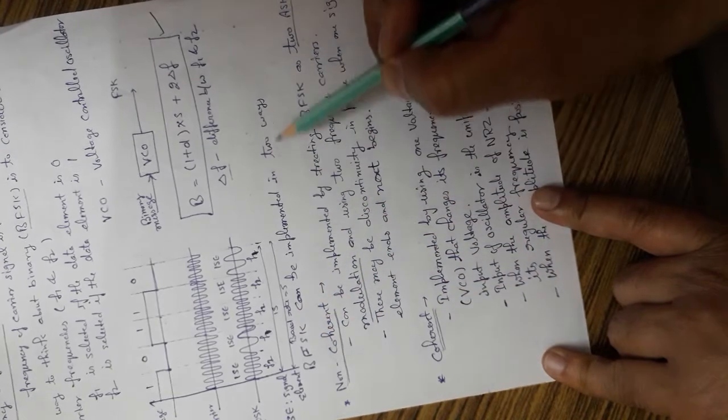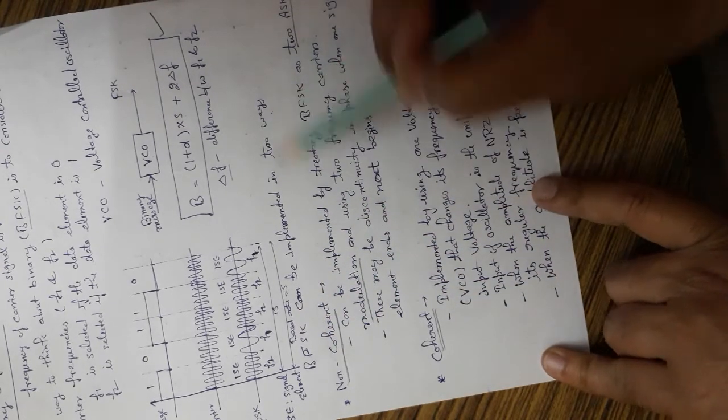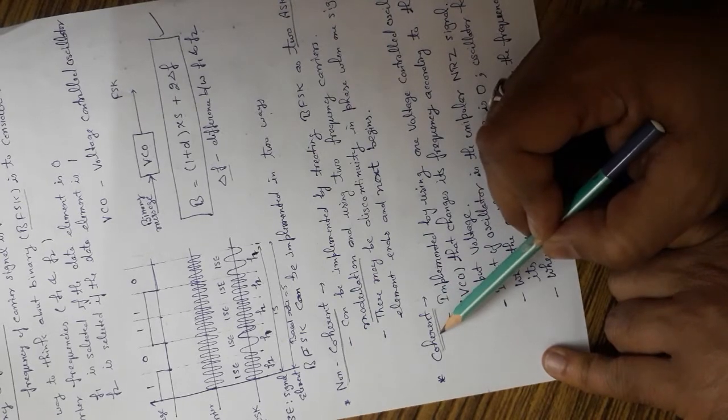BFSK can be implemented in two ways: one is non-coherent and second one is coherent.